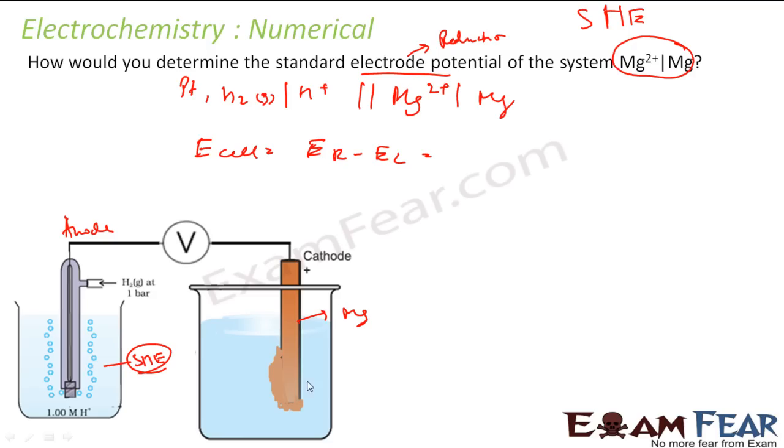So this is E of Mg2+ to Mg minus E of left, that is hydrogen, right? Hydrogen or H+ to H2, both reduction potentials. And this is experimental value we get, and this is nothing but E of Mg2+ to Mg minus 0, and this is E cell experimental value because when you connect with voltmeter here you will get this value.